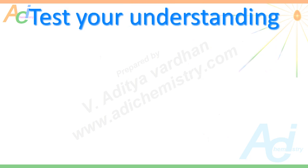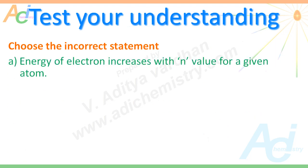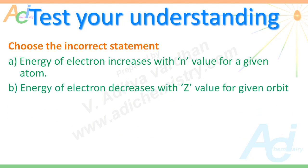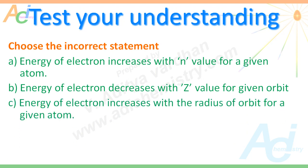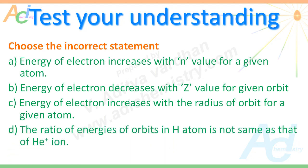Now it is time to test your understanding. You have to choose the incorrect statement among the following. Statement A: Energy of electron increases with N value for a given atom. Statement B: Energy of electron decreases with Z value for a given orbit. Statement C: Energy of electron increases with the radius of orbit for a given atom. Statement D: The ratio of energies of orbits in hydrogen atom is not the same as that of He⁺ ion. You have to choose the incorrect statement.